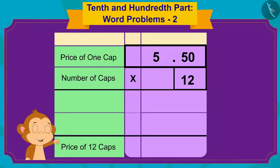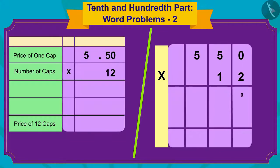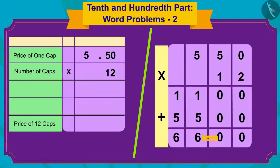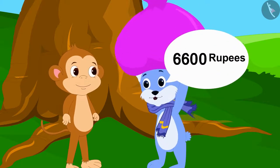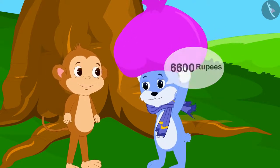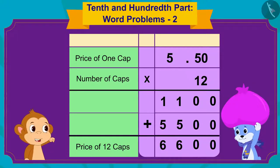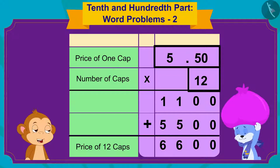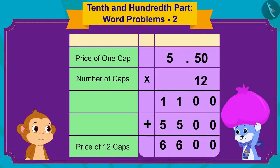Saying this, Babban quickly multiplied it on a paper and wrote six thousand six hundred as the answer. Bunny excitedly asked: Oh wow, then will I earn six thousand six hundred rupees? Babban replied: No, Bunny. Now we have to see how many digits are there after the decimal point in the numbers being multiplied. Can you tell me how many digits are there after the decimal point in five rupees and fifty paise?